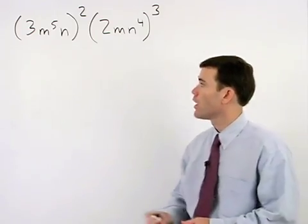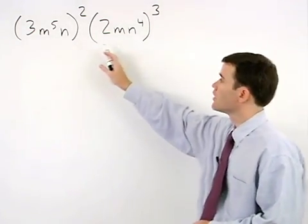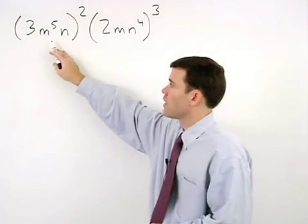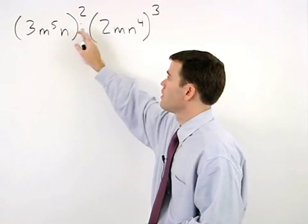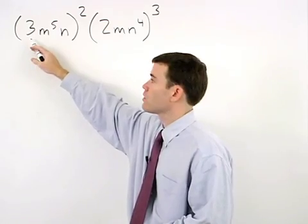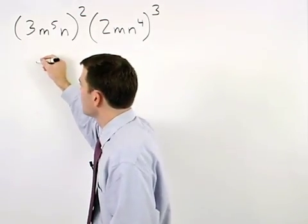We start this problem by applying the power rule for each set of parentheses. To simplify 3m to the fifth n squared, we first square the coefficient of 3 to get 9.